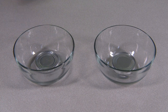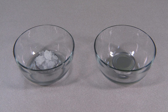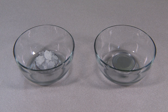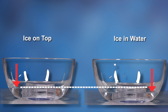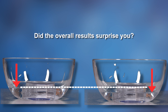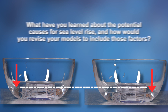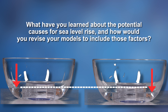Before we end, let's go back to where we originally started and take a look at our glacial meltdown demo. As you can see, the model with the ice on top has led to an increase in water level in the bowl as compared to the model without ice on top. Did your models reflect this? Did the overall results surprise you? What have you learned about the potential causes for sea level rise? And how would you revise your models to include those factors? Take a minute to reflect on your ideas and then to revise your model.